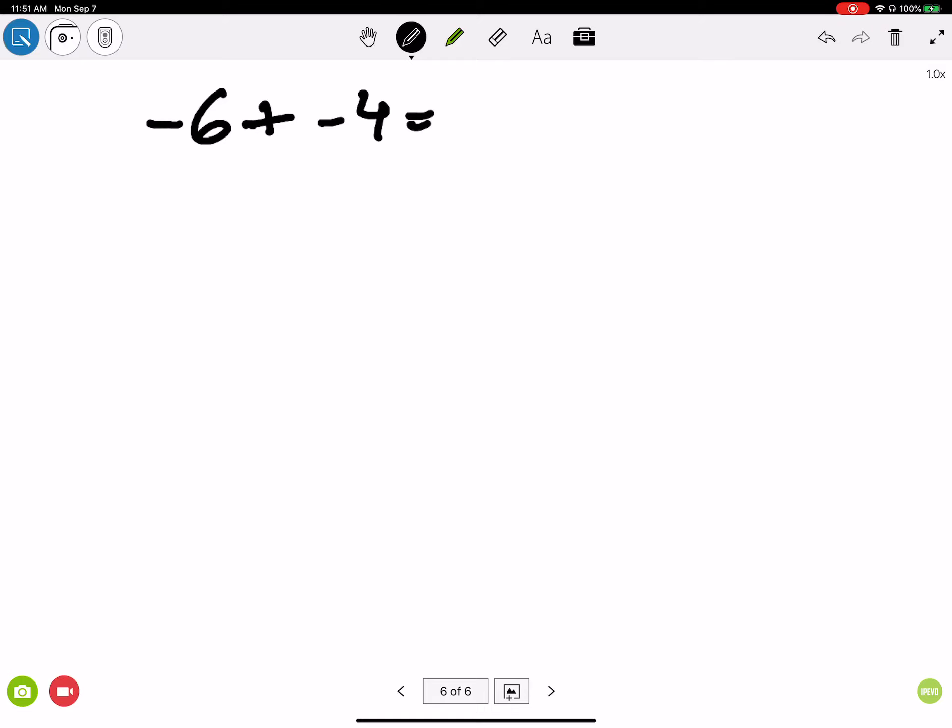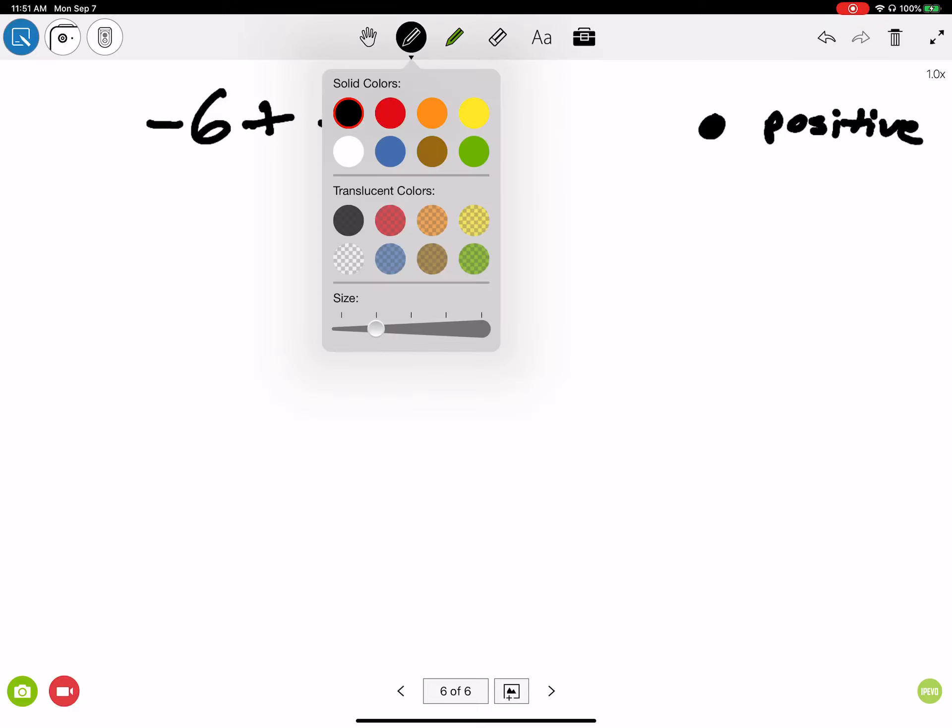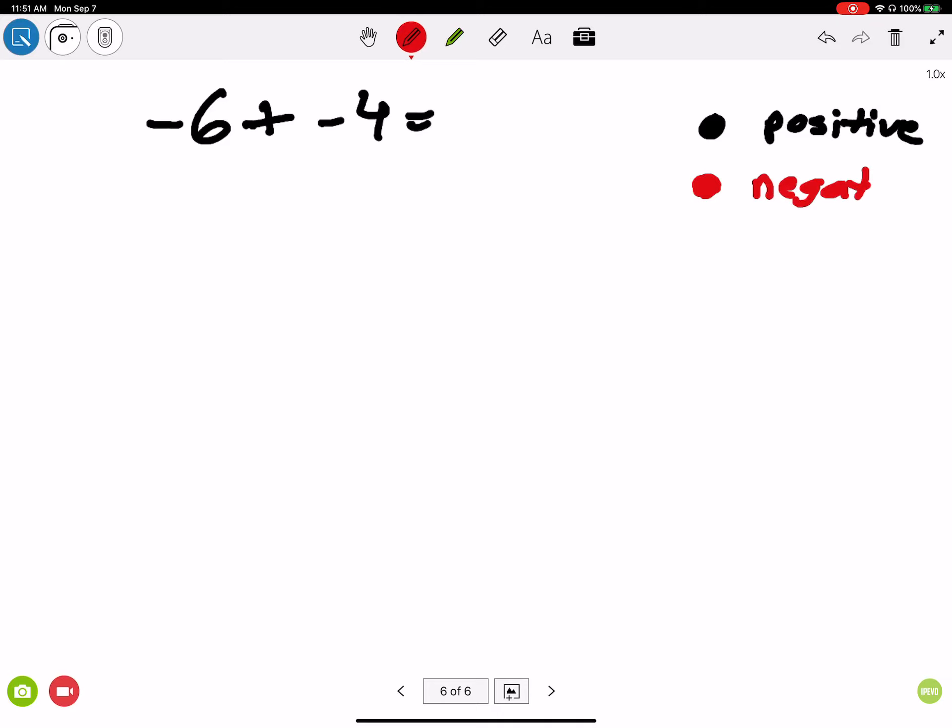For the sake of this, let's say that if I model this, any black circle is positive and any red circle is negative. Well, if I want to represent negative 6, that means I have negative 6: 1, 2, 3, 4, 5, 6.